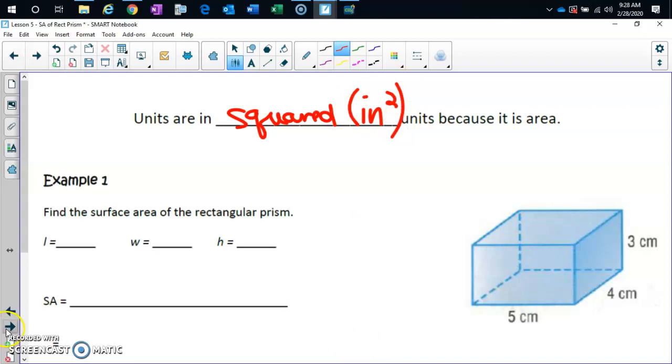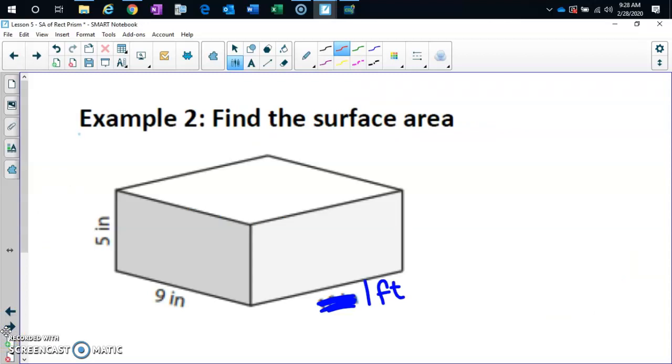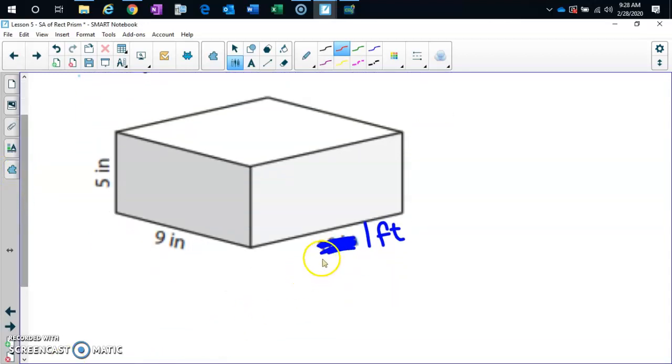Now I'm going to skip example one. I want you to go to example two in your notes, find this problem, but I want you to cross out whatever dimension was here and make that one foot. Cross out whatever was there and make that dimension one foot, because I want to make a point. So, first thing you notice in this problem is that I've got inches, inches, and feet. Can I find either volume or surface area if I have different dimensions? No.